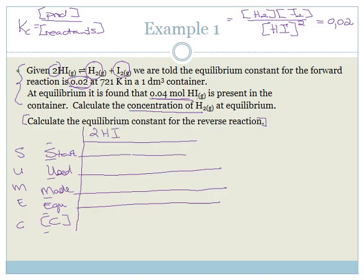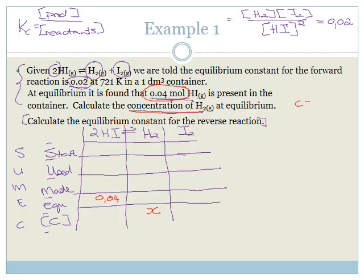We're going to use this table to understand what is happening to our reactants and products during the reaction until they reach the final state. At equilibrium we have 0.04 moles of hydrogen iodide, and we want to find X — the concentration of hydrogen. Since the volume is 1 dm³, concentration equals moles, so we start with 0 hydrogen and 0 iodine at the start.